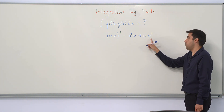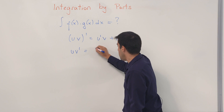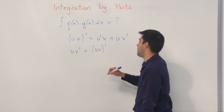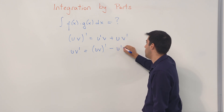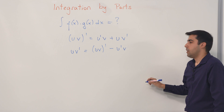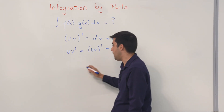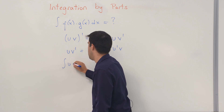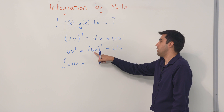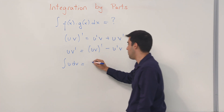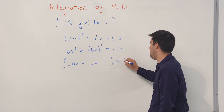So now, if you take the u v prime to this side: u v prime equals u v prime minus u prime v. Now, if you integrate this equation on both sides, you obtain the integral of u dv equals u times v minus the integral of v du.